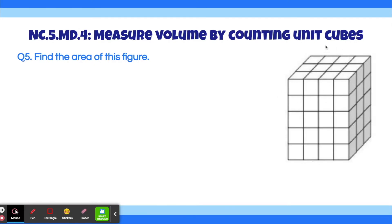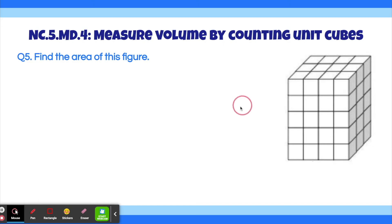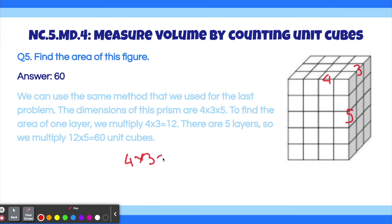Question 6. Find the area of this figure. The answer to this problem is 60. Let's solve this the same way as the last one. The dimensions of this rectangular prism are 4 times 3 times 5. So we multiply all three of these numbers: 4 times 3 equals 12, and then you multiply 12 by 5 to get 60. So our answer is 60.